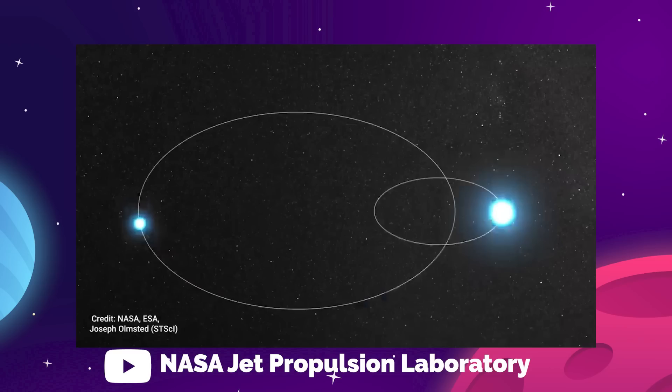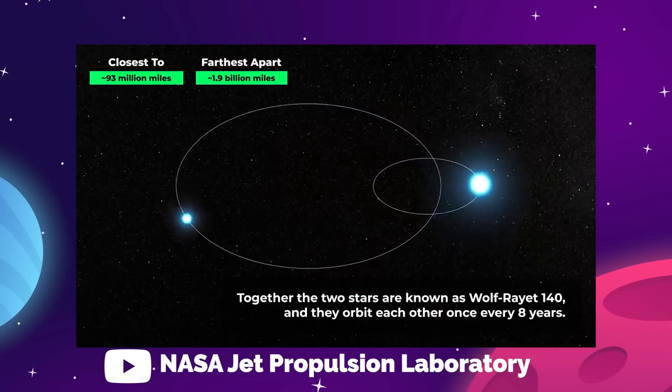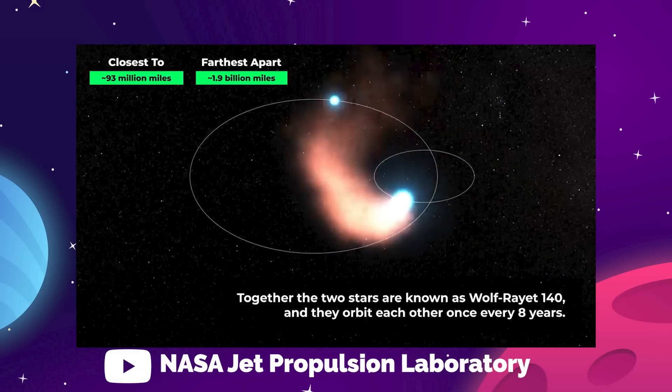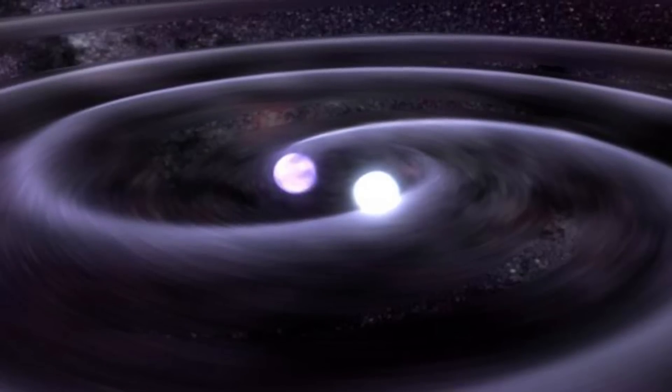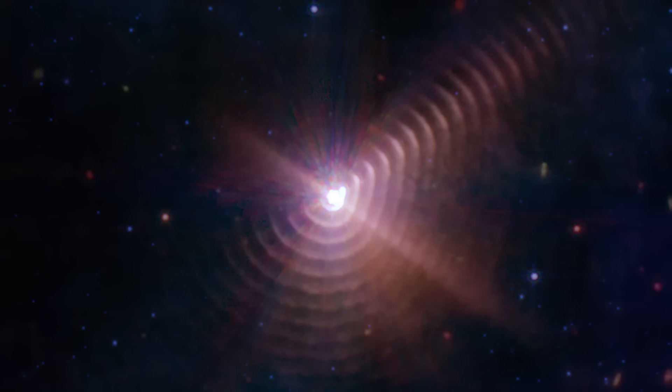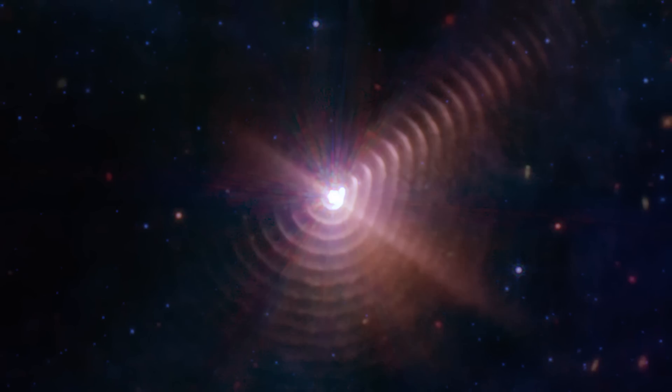The Type O twin to the Wolf-Rayet in system WR140 is a younger one, and its gravity is helping shed the dust off in this ripple pattern. NASA believes this is down to the two stars holding an elongated orbit, so the dust can only form when the two stars swing close enough to each other, about the distance from the Earth to our sun. So the ripples are showing the orbit of the stars, each ring forming as the pair's solar winds meet and compress into waves of dust.